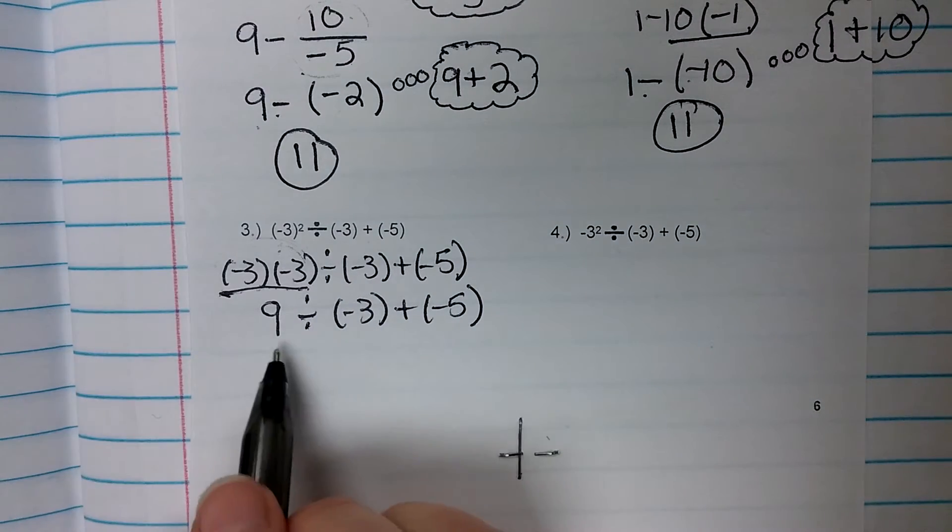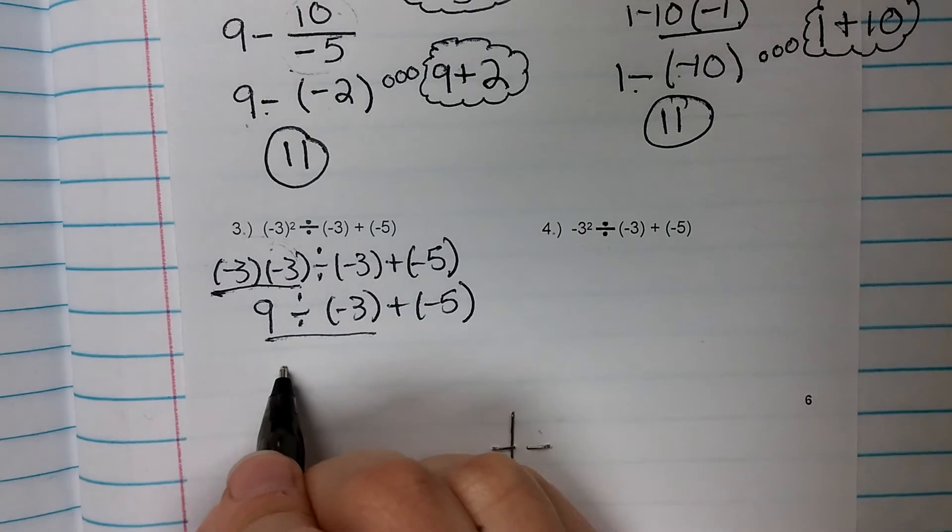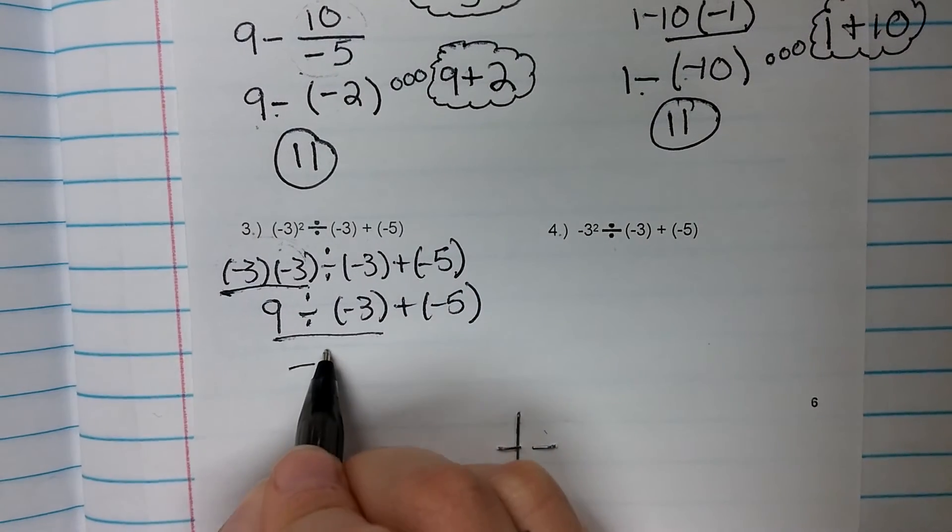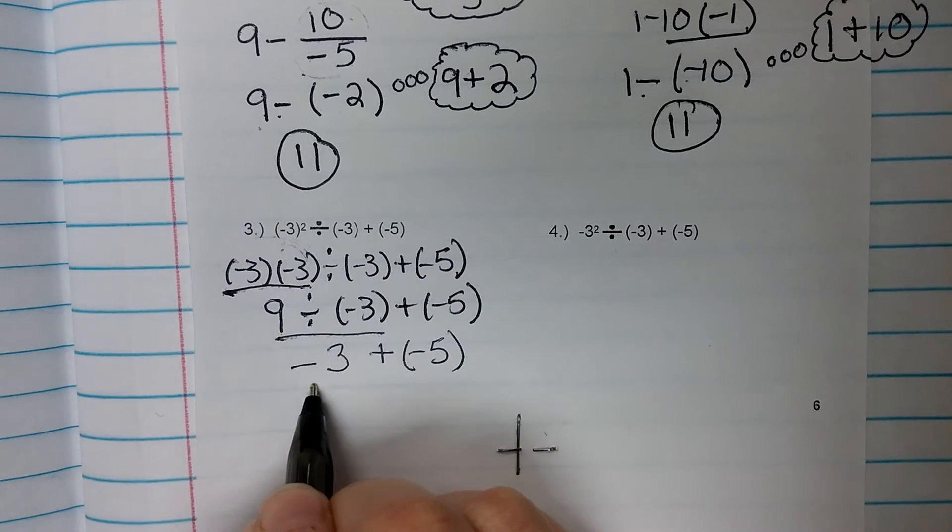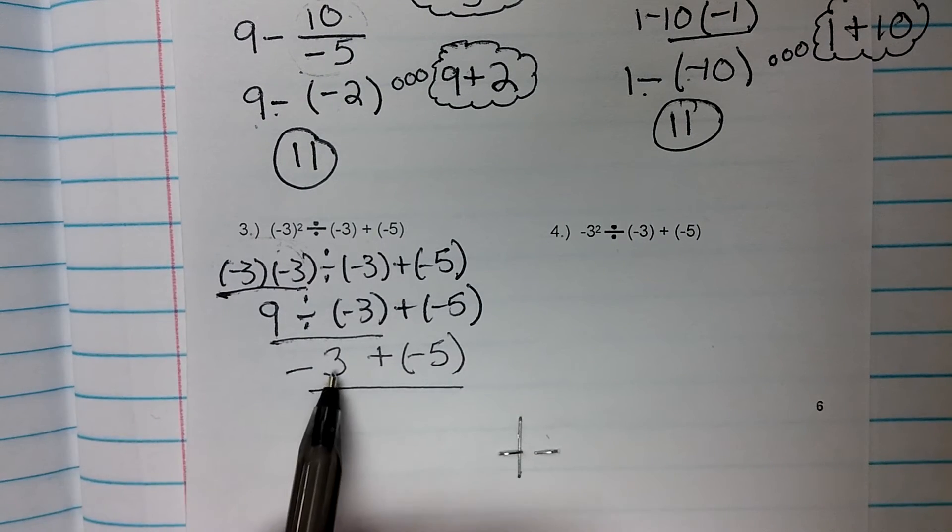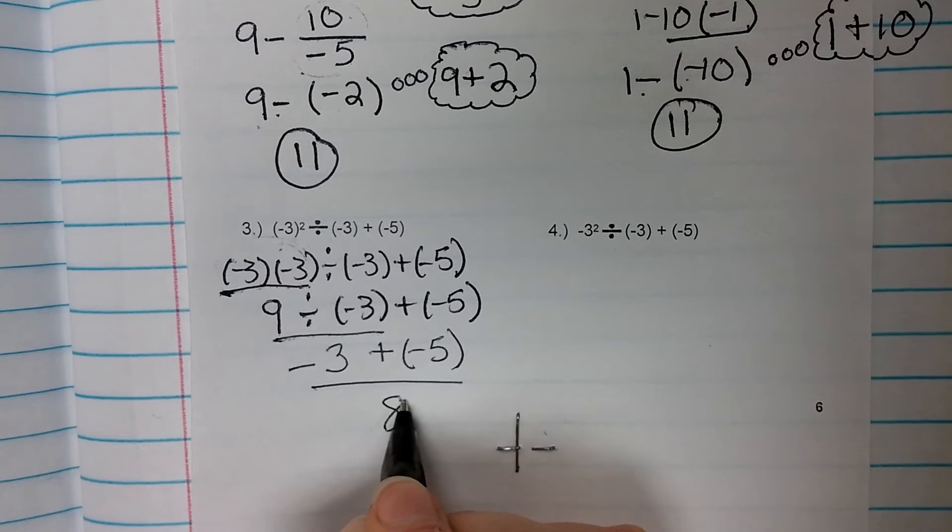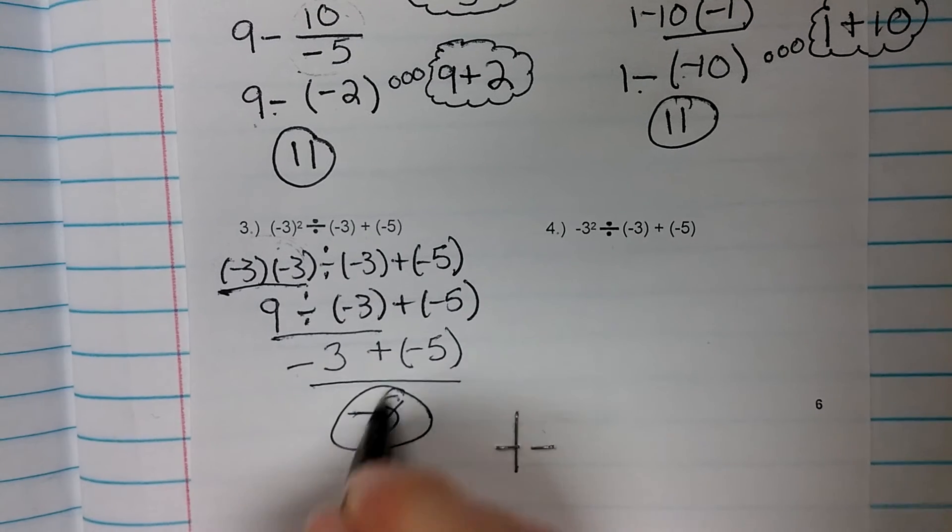Next step is division. 9 divided by negative 3. Positive divided by a negative is a negative, and 9 divided by 3 is 3. And then last but not least, we have negative 3 plus 5. Signs are the same with these integers, so we can add them. 3 plus 5 is 8, and we keep the sign they share. So the answer to number 3, negative 8.